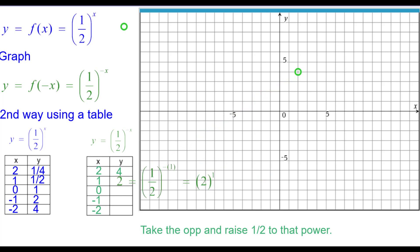1 half raised to the negative 1 is reciprocal, which is 2. So 1 comma 2. The opposite of 0 is 0 and anything at the 0 power is 1. So 0, 1. Except 0, of course.